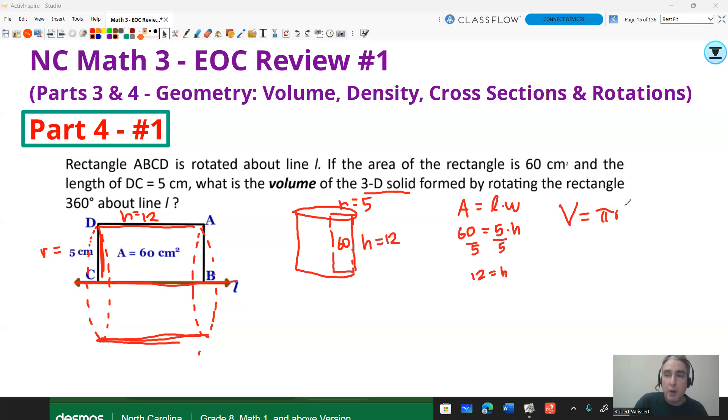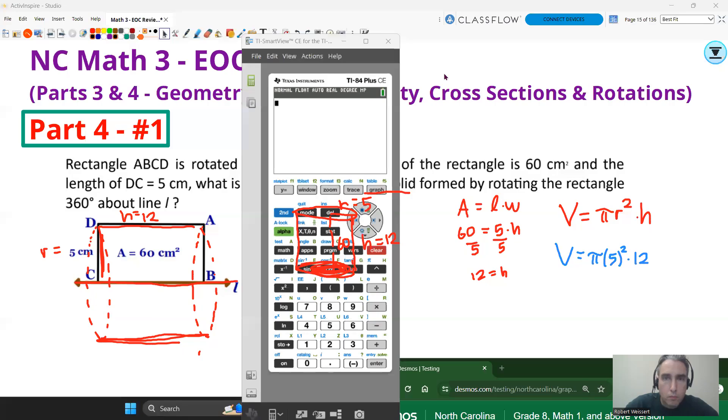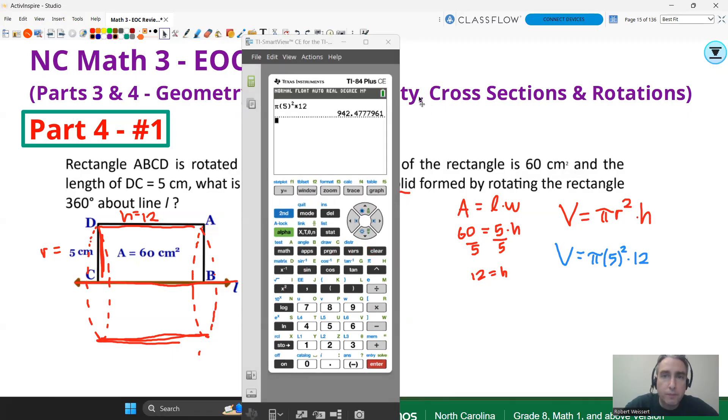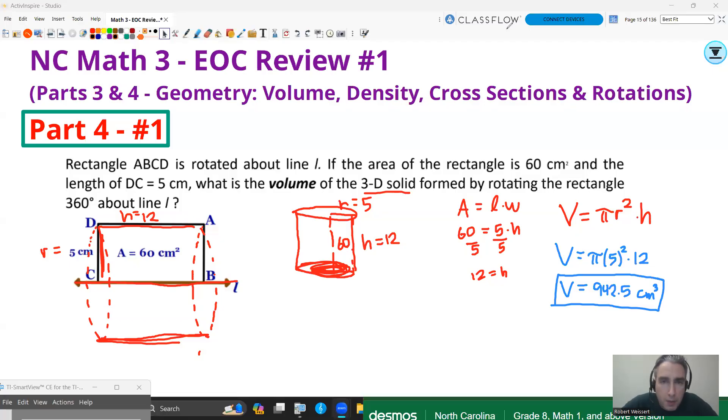I can plug those into my volume formula for a cylinder. Got to know that formula: pi r squared, area of the circle, multiplied by the height. Plug in your radius and your height. Let's plug that in. Pi r squared. On this calculator, if I do second that button, I'll get pi. 5 times squared button, multiplied by 12. And I'm going to get 942.47, so I'll round that up to 942.5 cubic centimeters. Remember, volume is cubic units.